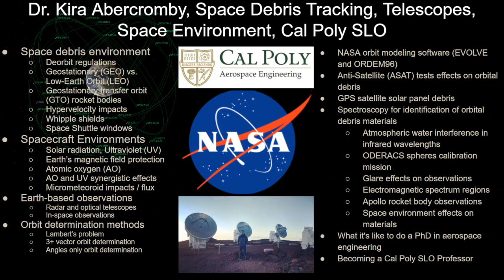There's one case where she was looking at GPS satellite solar panel debris using spectroscopy from Earth. Then going deeper into spectroscopy for identification of orbital debris material: how atmospheric water interferes with infrared wavelengths, the ODRAX mission that deployed calibration spheres, glare effects on observations, electromagnetic spectrum regions to identify different materials, Apollo rocket body observations to observe titanium oxide paint, space environment effects on materials over time, and what it was like doing her PhD — including advice for anyone thinking about a PhD and why she became a professor at Cal Poly SLO.